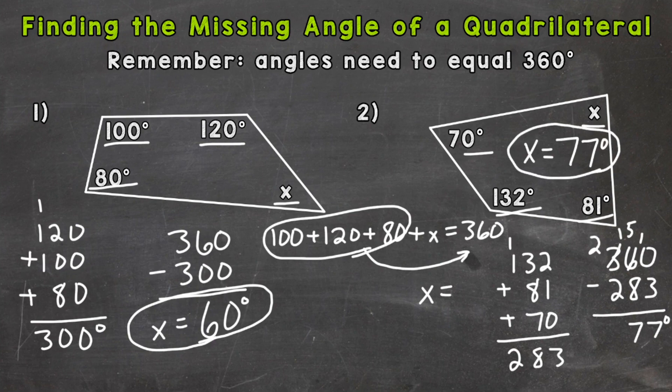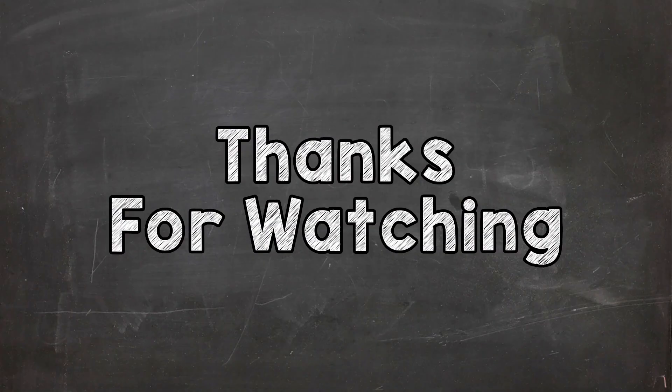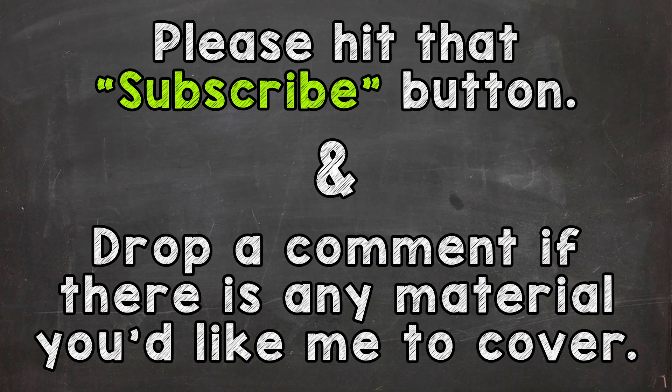So just to recap, add up all of your known angle measures and then subtract that from 360, and that will give you your missing angle. I hope that helped. Thanks so much for watching. Until next time, peace.